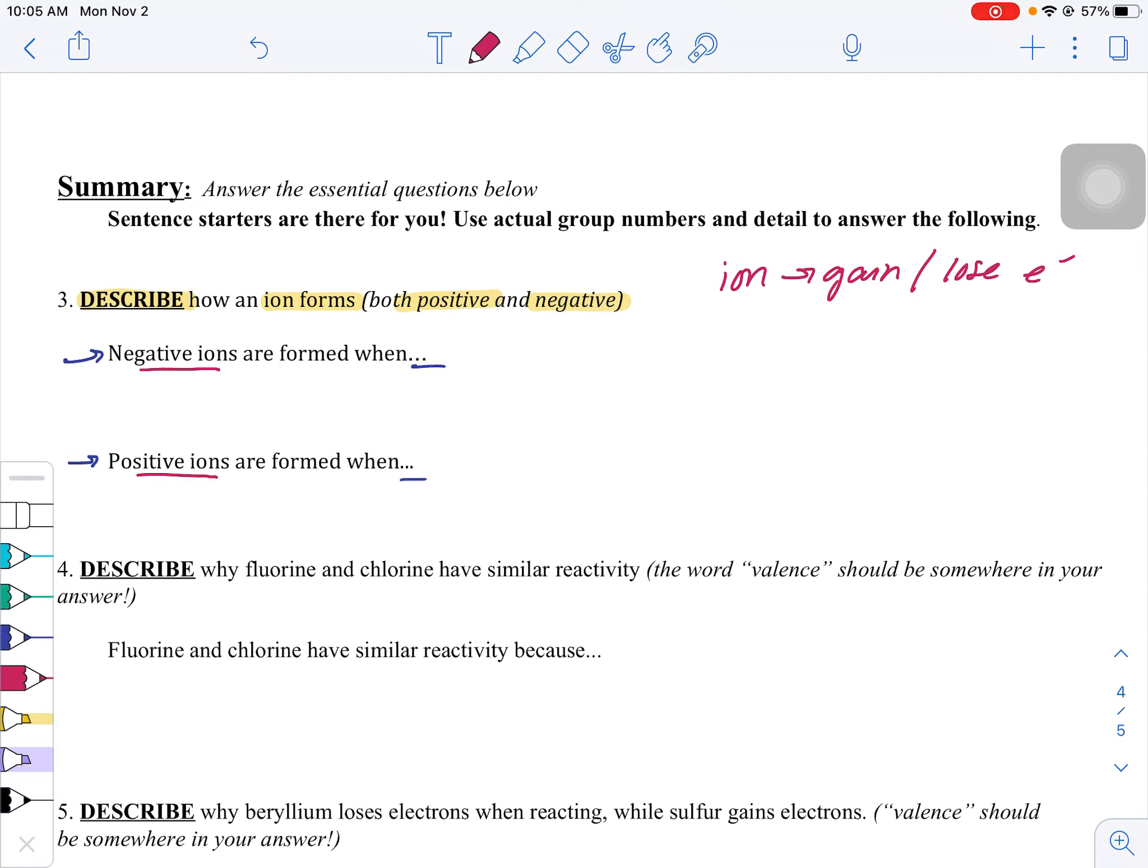Remember, if I'm gaining electrons, what I'm doing is adding in negative charges. So I end up as an overall negative charge.